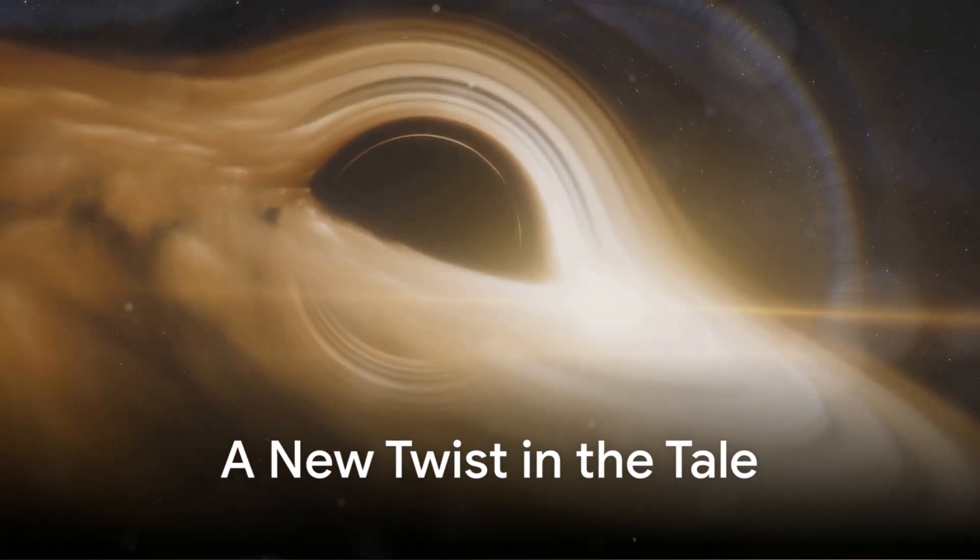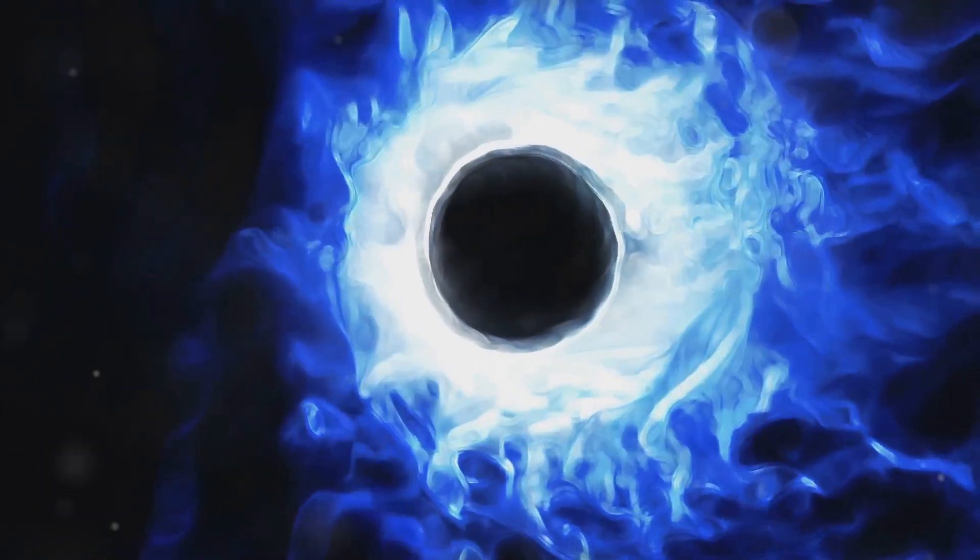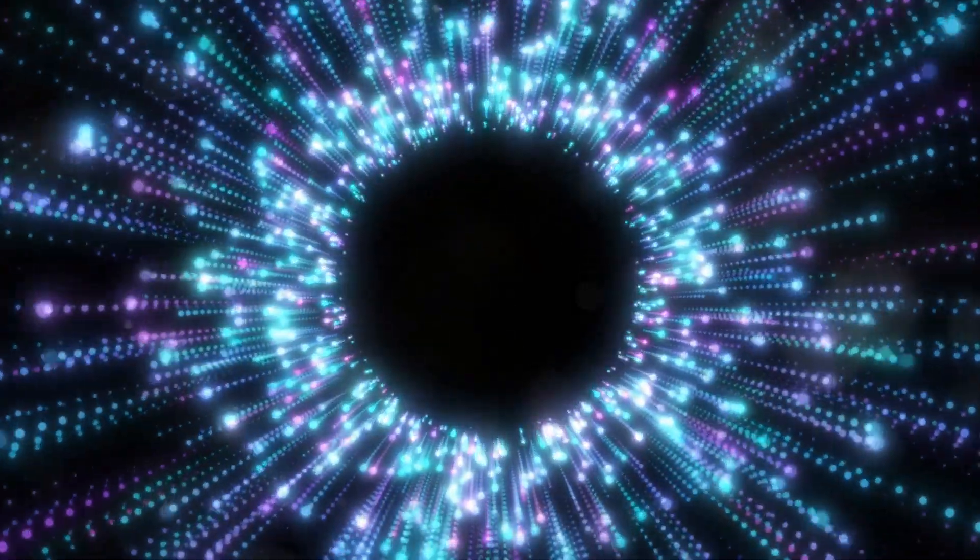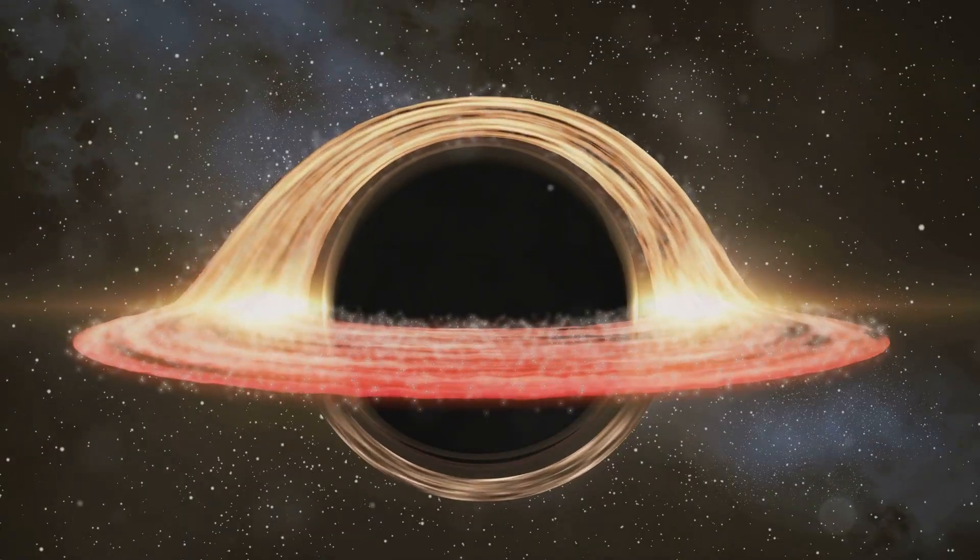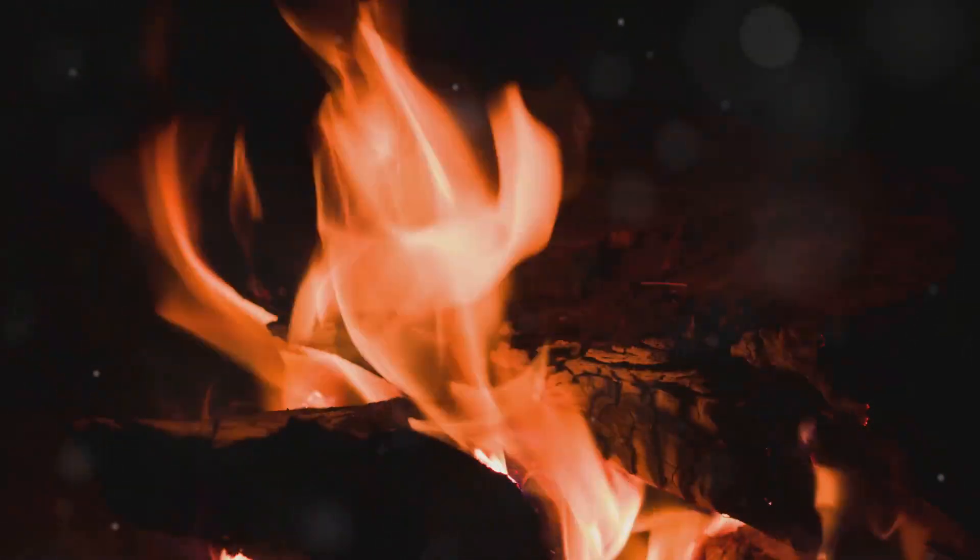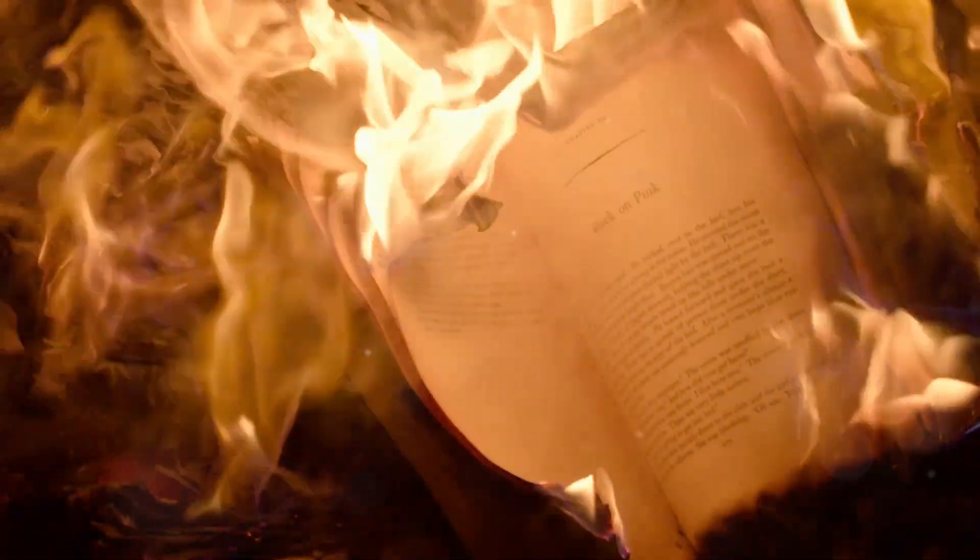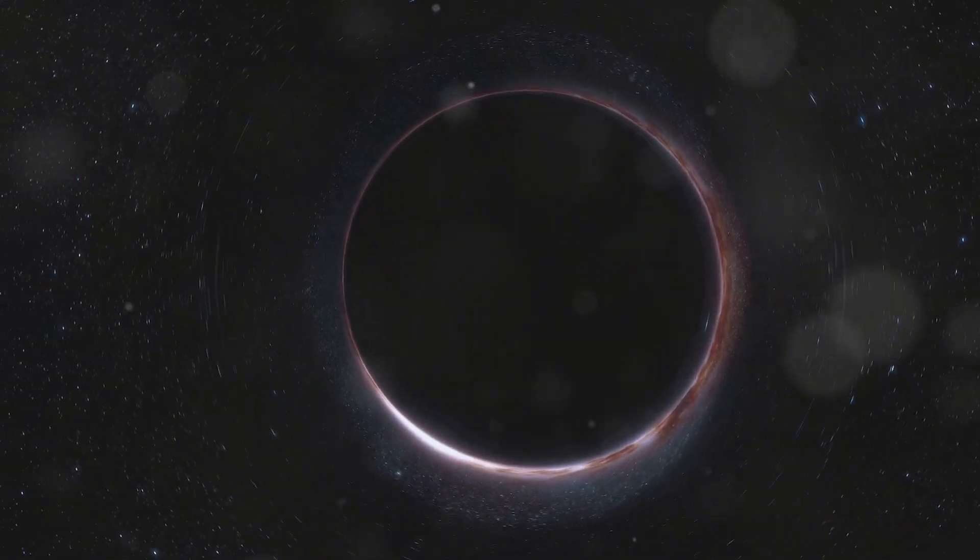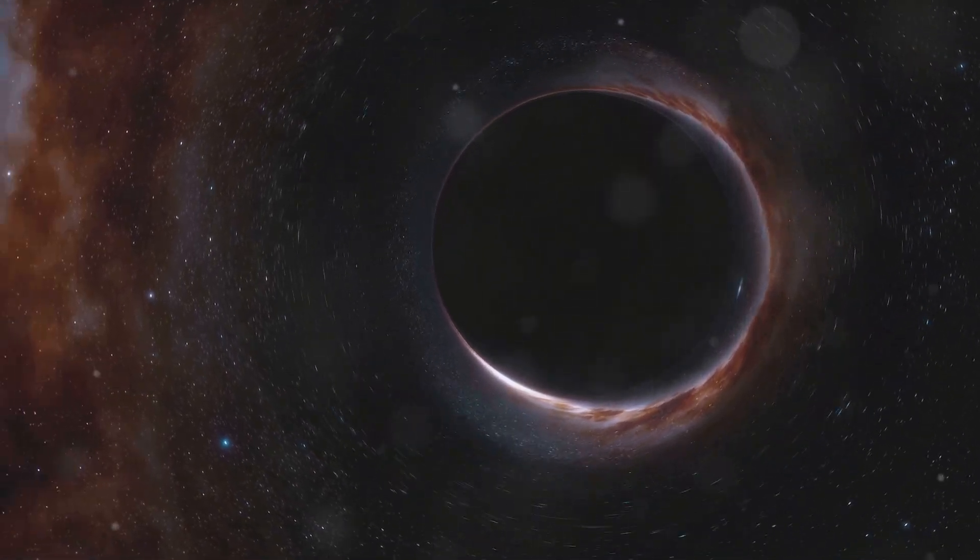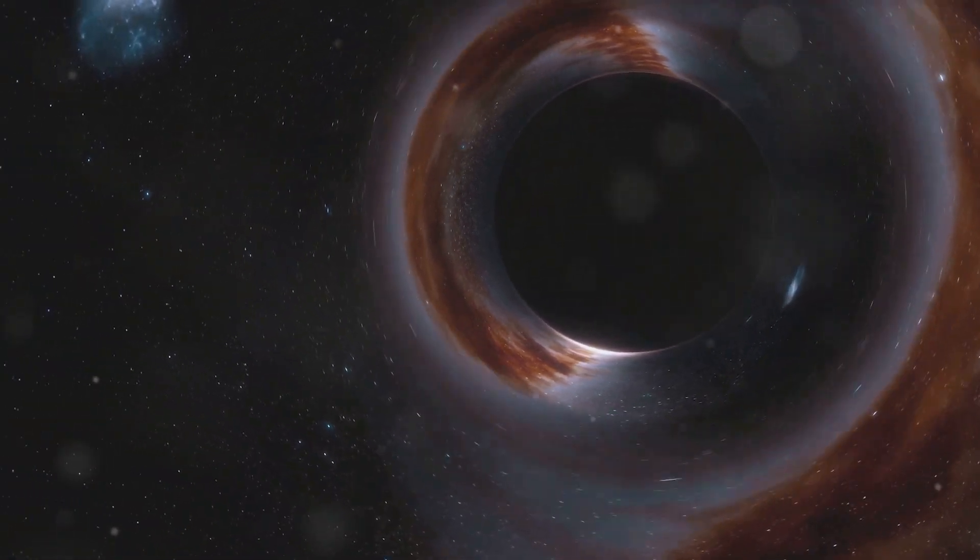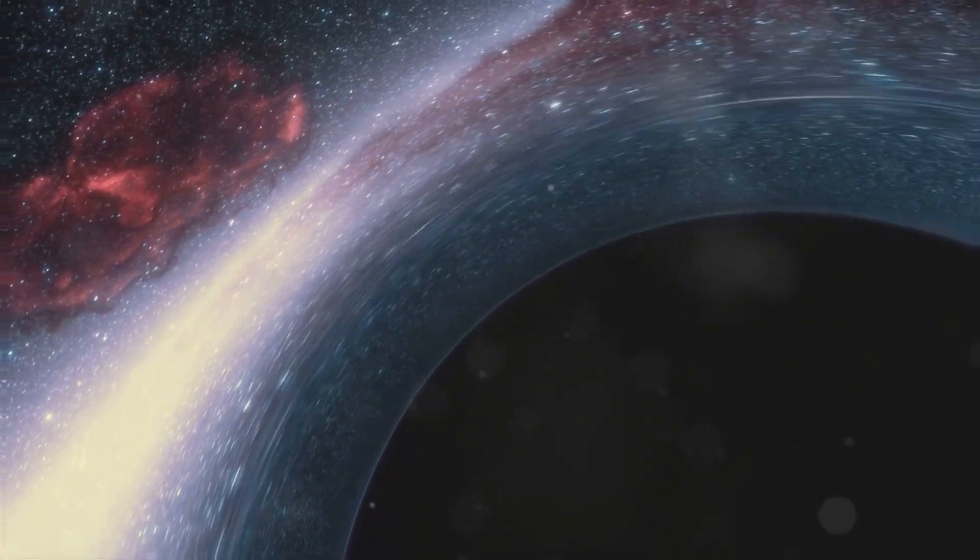Remember how we talked about information being conserved? Well, Hawking radiation throws a wrench into that idea. The particles that escape as Hawking radiation seem to be random. They don't carry any specific information about the objects that fell into the black hole. Imagine throwing a book into a fire. The book burns, and the smoke and ashes that rise up don't tell you anything about what was written in the book. Similarly, the information about the objects that fell into the black hole seems to be lost forever, encoded in the seemingly random Hawking radiation.